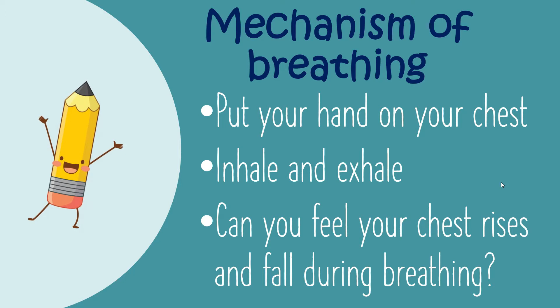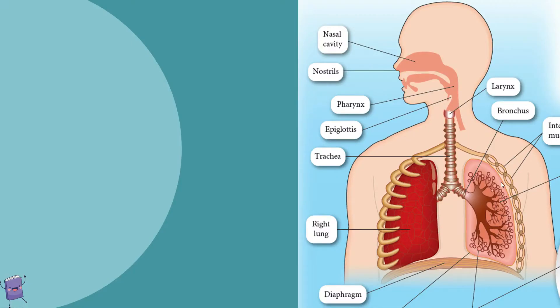The movement of the ribs and the diaphragm bring about breathing. The air passes from the nostrils to the nasal cavity, to the pharynx and to the larynx, to the trachea, to the bronchus, to the bronchioles, and at the end into the alveoli.